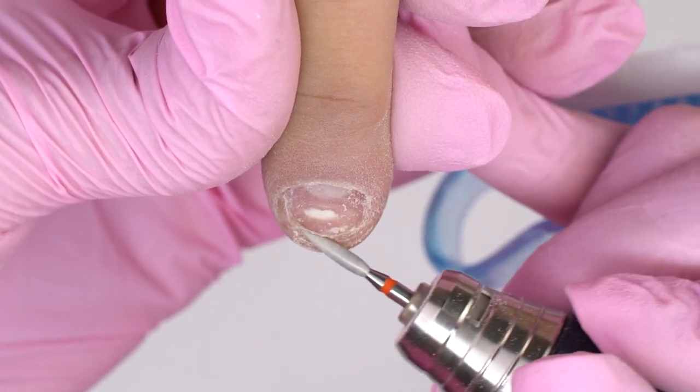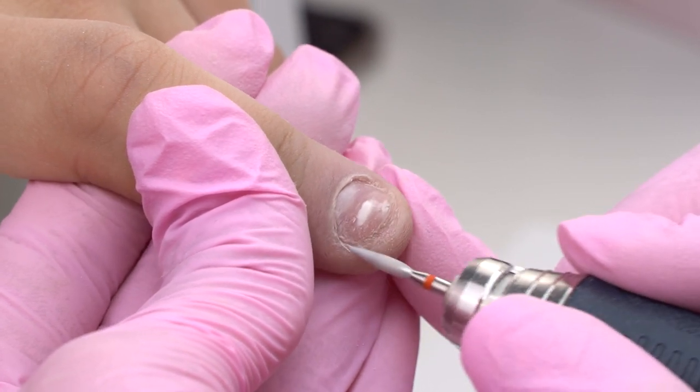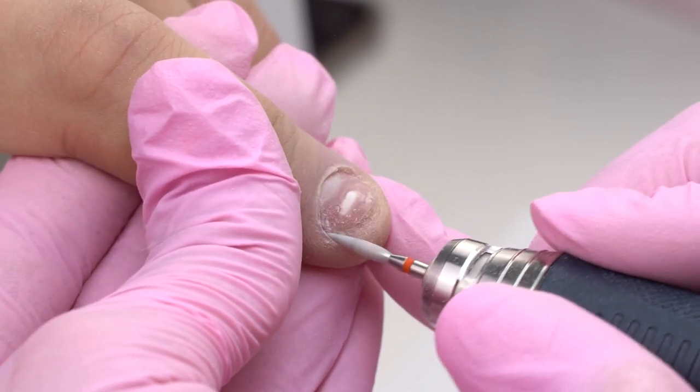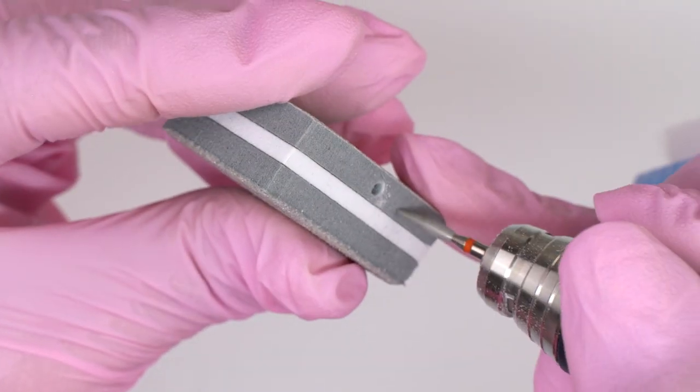Make sure to process the front nail fold as well, so that it's easier to do a coating later. On such bitten nails, the front fold is often protruding, which makes the sculpting process more difficult.